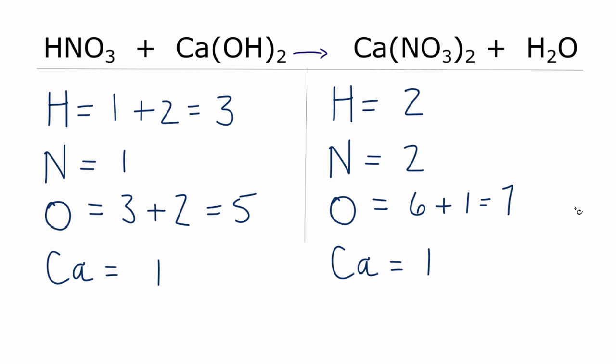So it's kind of messy. I have a bunch of odd numbers. Let's see. Why don't I fix the nitrogens? I have two here and one here. So I'm going to put a two in front of the nitric acid, and then I need to update all of these atoms, the hydrogen, nitrogen, and oxygen.